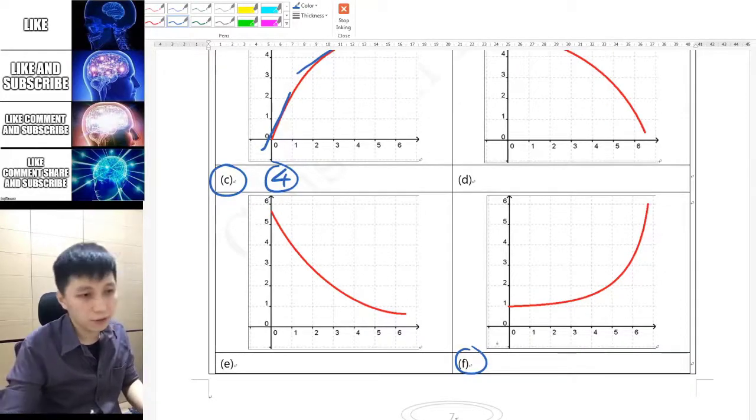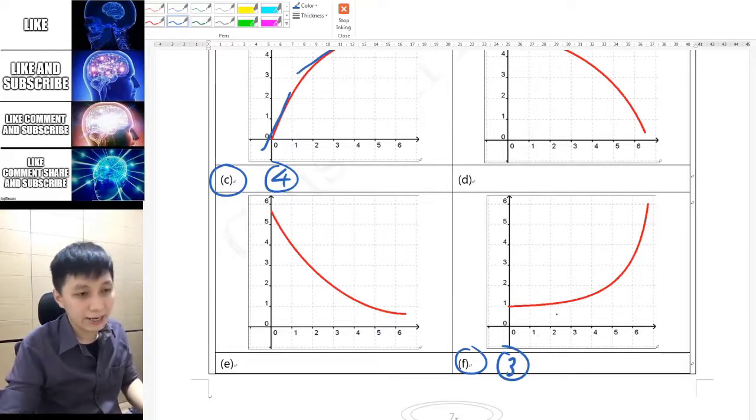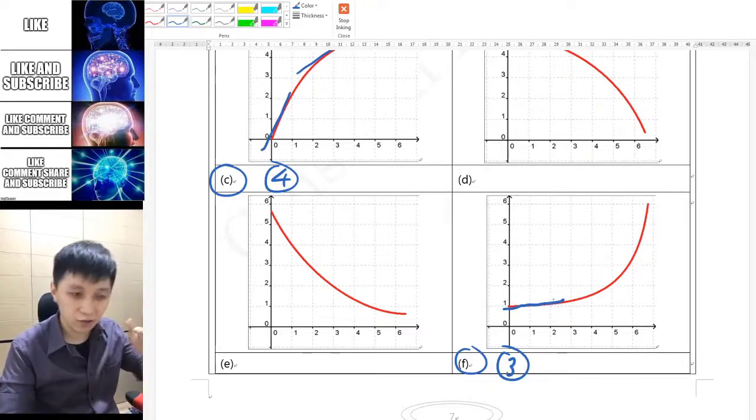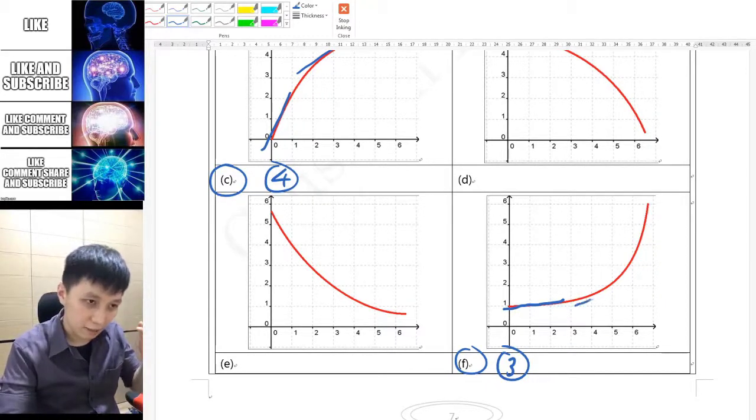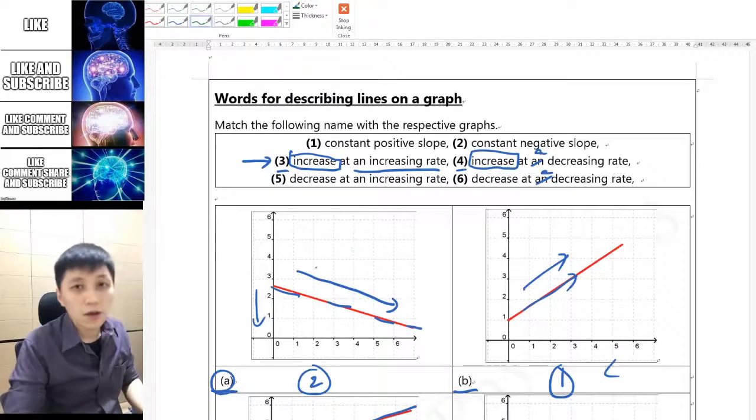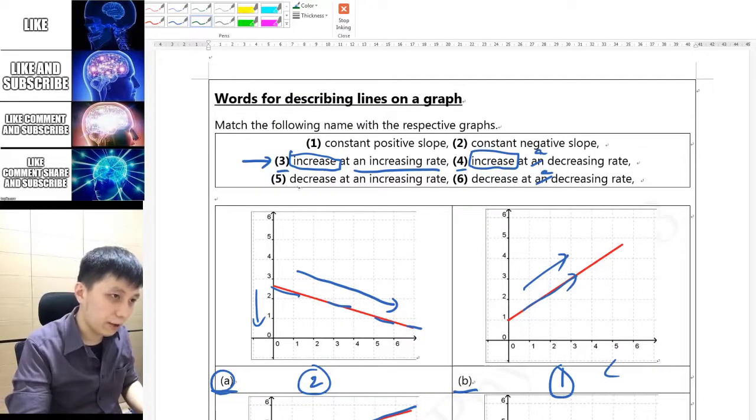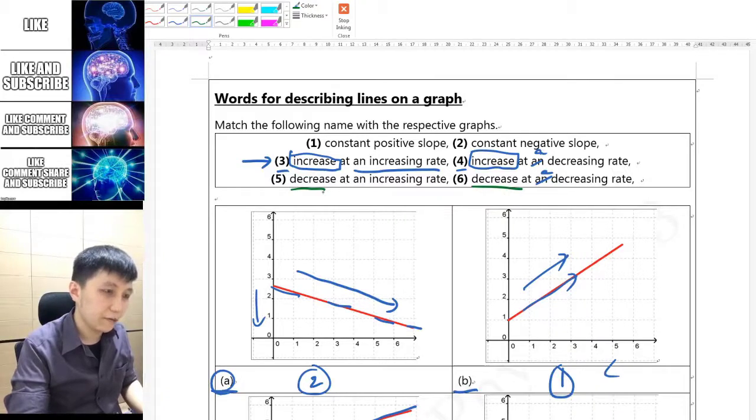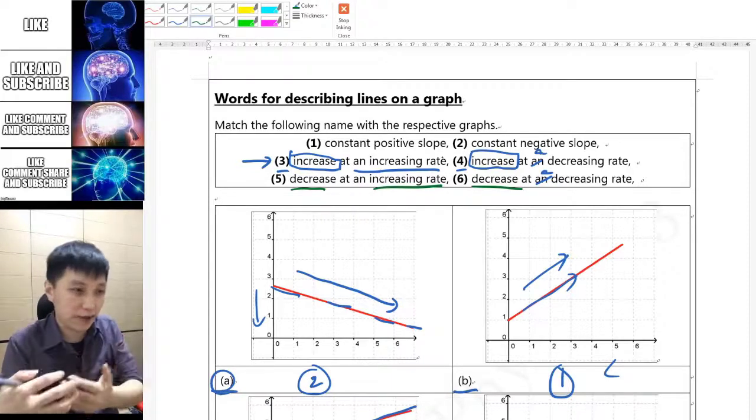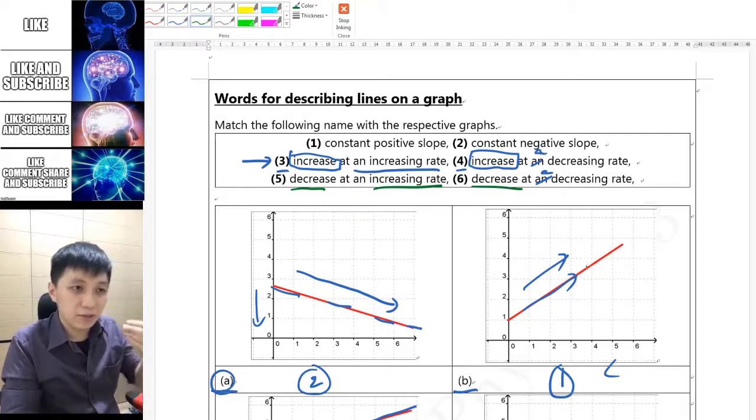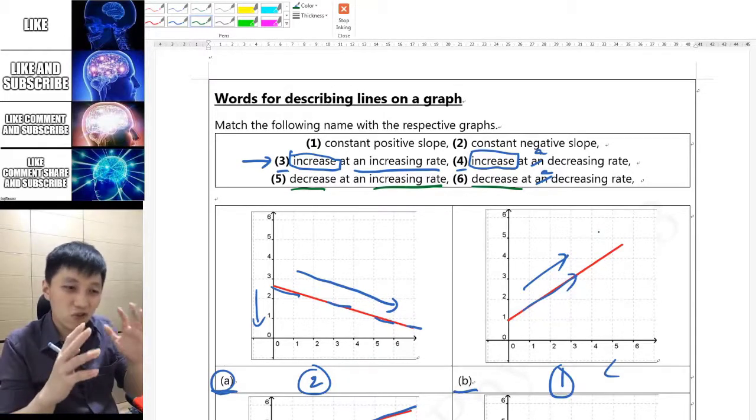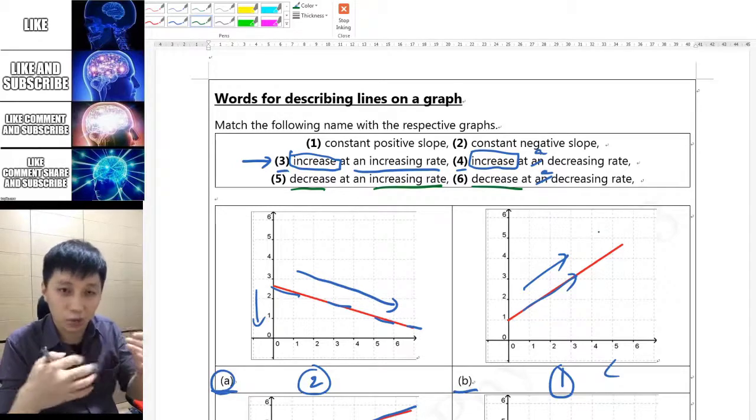For F obviously then it will be number 3, which means increase with an increasing rate, because you see the slope kind of starts with gentle but of course positive still, and it becomes more steep and much more steep later on when time goes by. If you understand that then the last two shouldn't be hard for you. So 5 and 6 are both decrease, but then 5 is decrease in an increasing rate, that means it's getting worse and worse and worse, it's becoming faster and faster when you decrease. Number 6 is decrease with decreasing rate, that means it is decreasing but then it's not getting as worse, so it's kind of slower and slower.